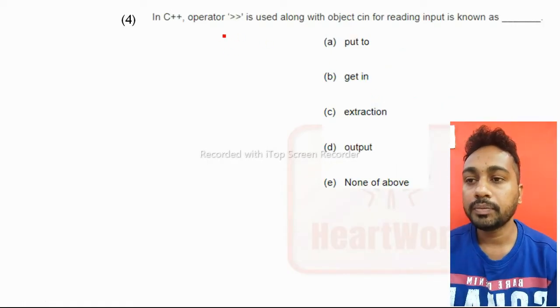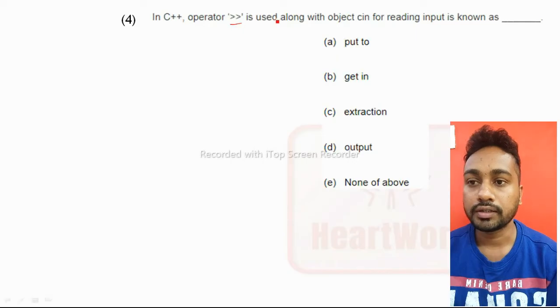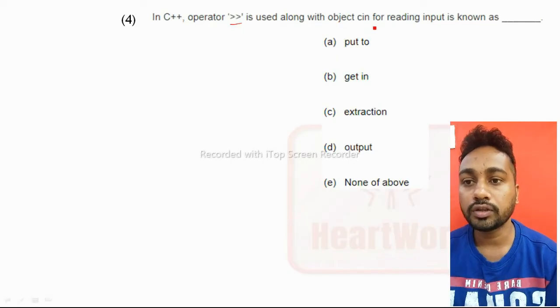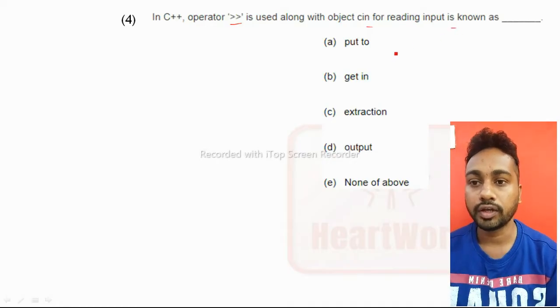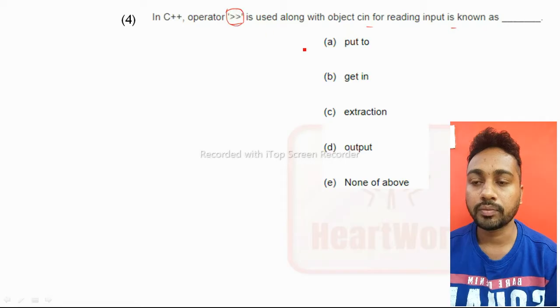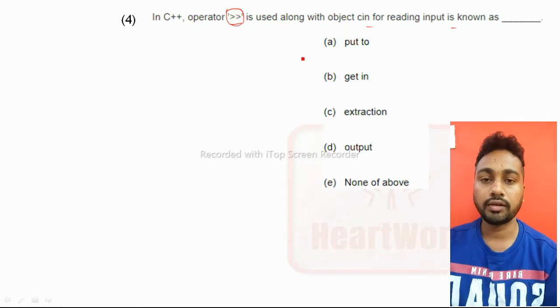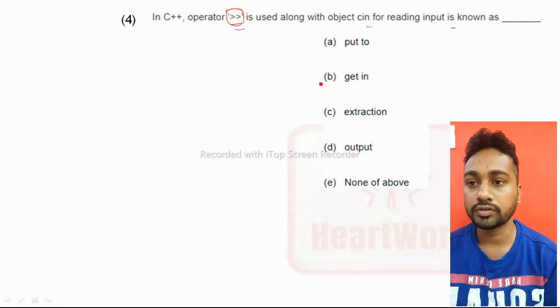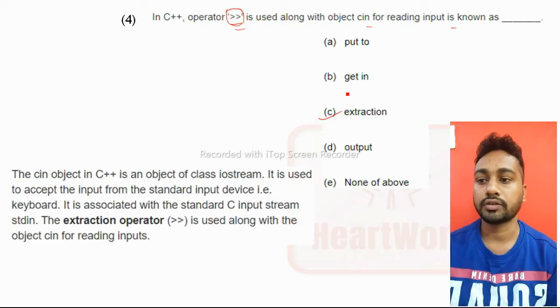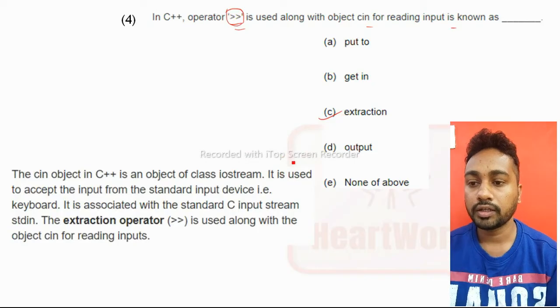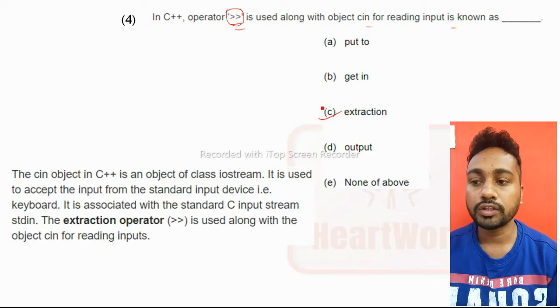In C++ this operator is used along with object cin for reading input is known as - so this operator in C++ this operator we are using while writing a coding. This is nothing but what? This is extraction. This is extraction operator used along with the object cin for reading inputs.